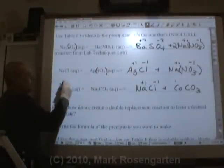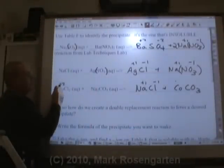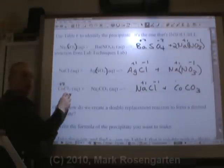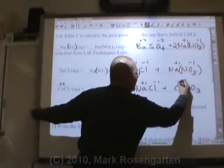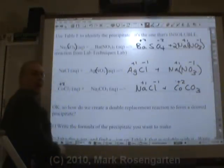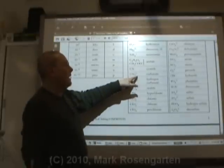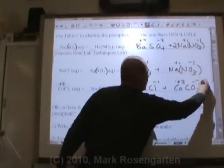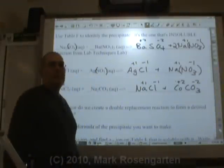Two chlorides means cobalt was plus two charge. If it had been plus three, it would be CoCl3. So that charge remains plus two on that side. And carbonate is minus two. So that's the formula for that compound.